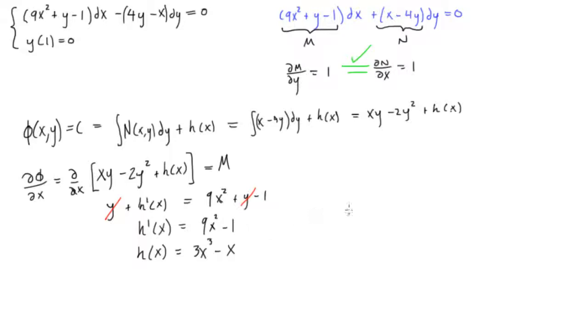Okay, so now we can write what phi is. So we say phi, we can even say it's function of x and y is equal to, where did we have it, we have xy minus 2y squared, as we found out up here, plus h of x. But h of x is equal to 3x cubed minus x. So we can say plus 3x cubed minus x. And this is all equal to c.